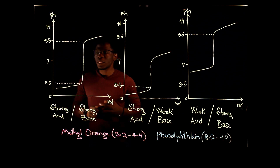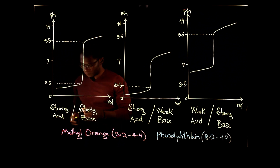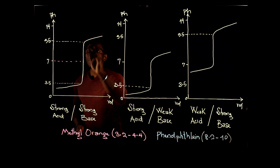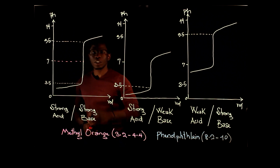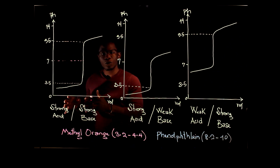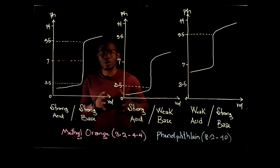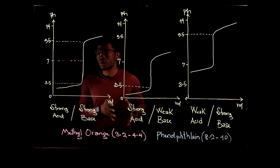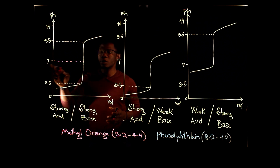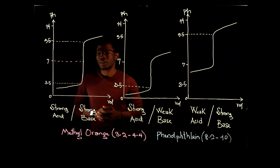The midway point between these two extremes is called the equivalence point. The equivalence point is the point where the number of moles of acid is essentially the same as the number of moles of base in the solution. For a strong acid reacting with a strong base, we can see that the equivalence point is at about pH 7.